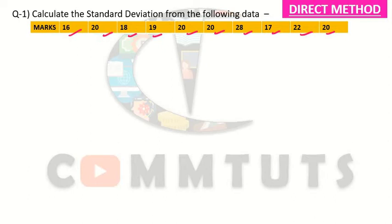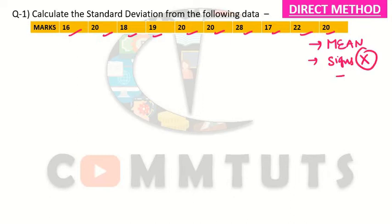When you calculate standard deviation, you need to keep two things in mind. First, standard deviation is always calculated from the mean. Second, we do not ignore signs. If your deviation is positive, it remains positive; if your deviation is negative, it remains negative. We will not convert negatives to positives here.